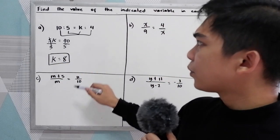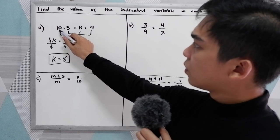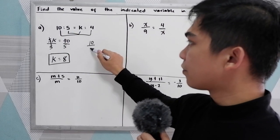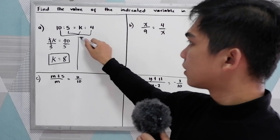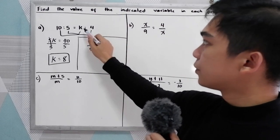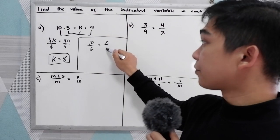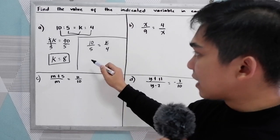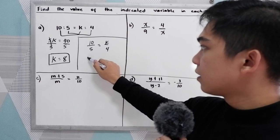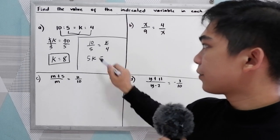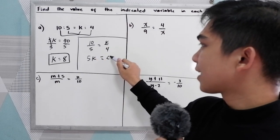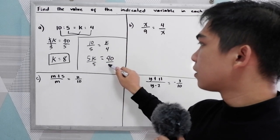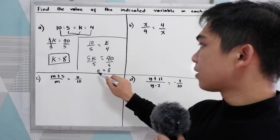Another way is to write the ratio as a fraction: 10 over 5 is equal to K over 4. Using cross multiplication, 5 times K equals 5K, is equal to 10 times 4, that is 40. Divide by 5, so K equals 8. We come up with the same answer.